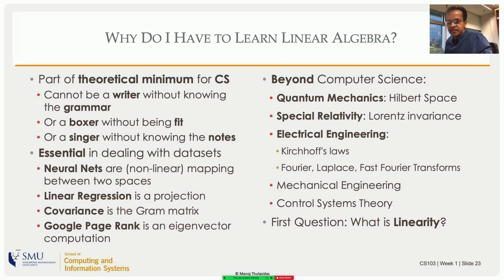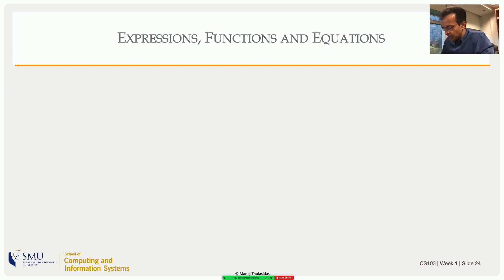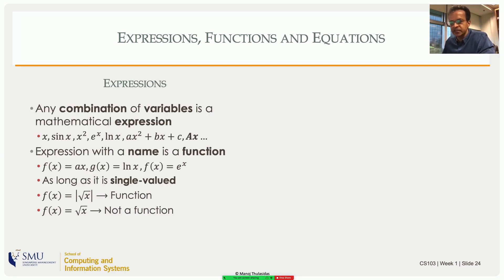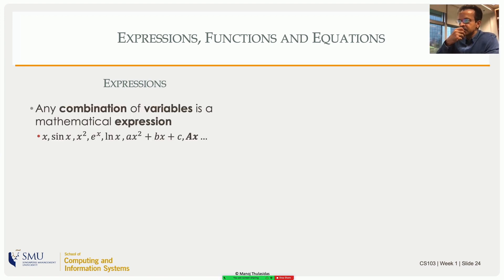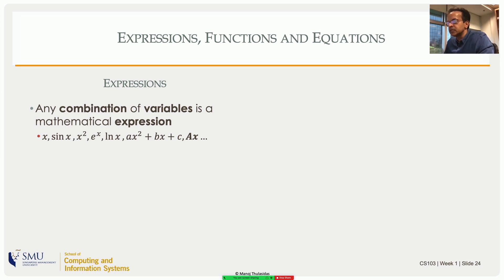Let's take a step back and ask: what is this linearity that appears in the name 'linear algebra'? Before we can answer that sensibly, we have to take one more step back and talk about variables, expressions, equations, and functions. What is a variable in the context of algebra? It's a placeholder for a value — a container for an unknown value. An expression is a combination of variables using mathematical operations. So x squared is an expression, x itself is an expression, sine of x is an expression, and a quadratic ax squared plus bx plus c — all those things are expressions.